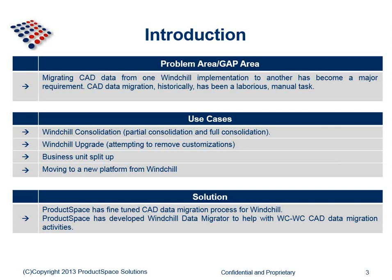A third aspect is using this tool for extraction only rather than migrating to another Windshield system. For instance, if your company is moving to a new platform like TeamCenter, we can extract that data so you can move it there. In the past, migrating CAD data was a major, very laborious, and manual process. You had to use the Worker Manager from within PRO-E to extract, move, and import the data. There were also risks of regeneration issues and naming conflicts when importing objects that share standard parts.